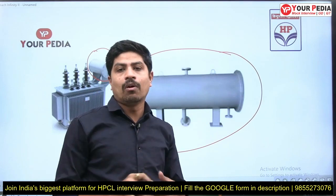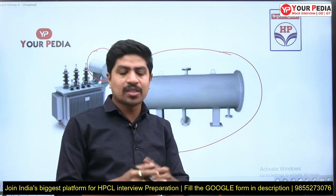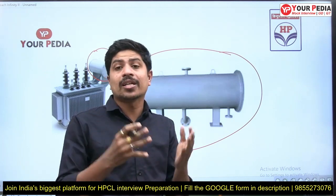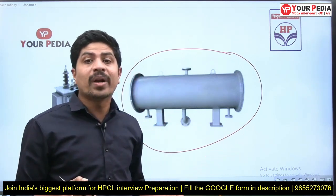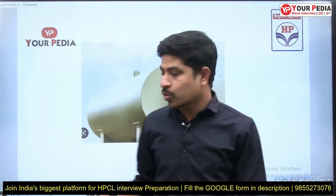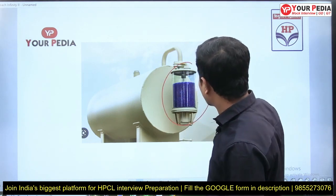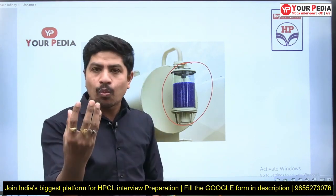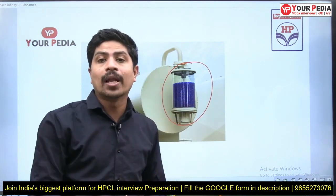If the transformer is off or the load decreases, the insulating oil in the transformer will contract. Then, through the breather — there is an equipment called a breather — some air will enter into the conservator tank and then into the insulating oil.